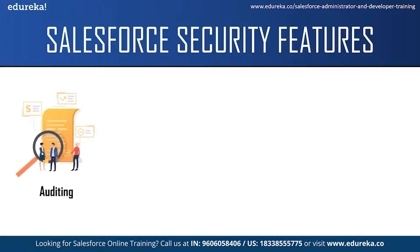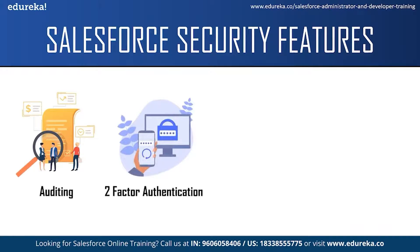Now let's look at some Salesforce security features. The first is auditing — Salesforce tracks all login attempts for the past six months, including login location and IP addresses. Administrators can also turn on field history tracking, providing visibility into field value changes and which users made them. The next feature is two-factor authentication, where administrators can enable company-wide two-factor authentication requiring an OTP sent to a user's phone or email when logging in from a different system or IP address.